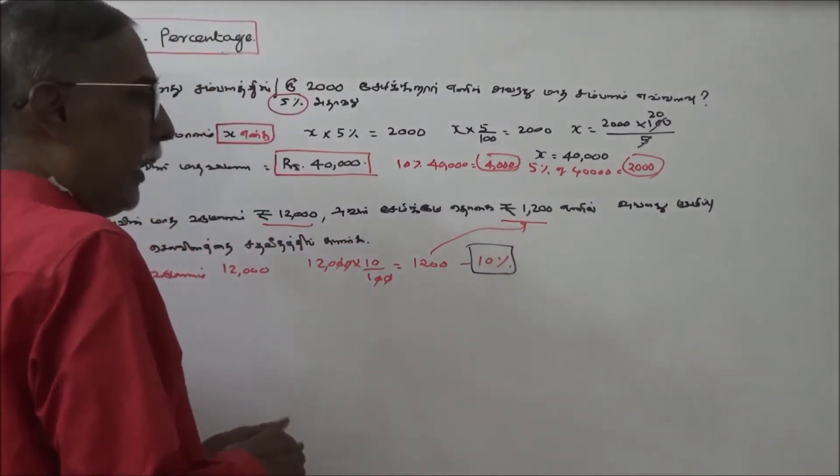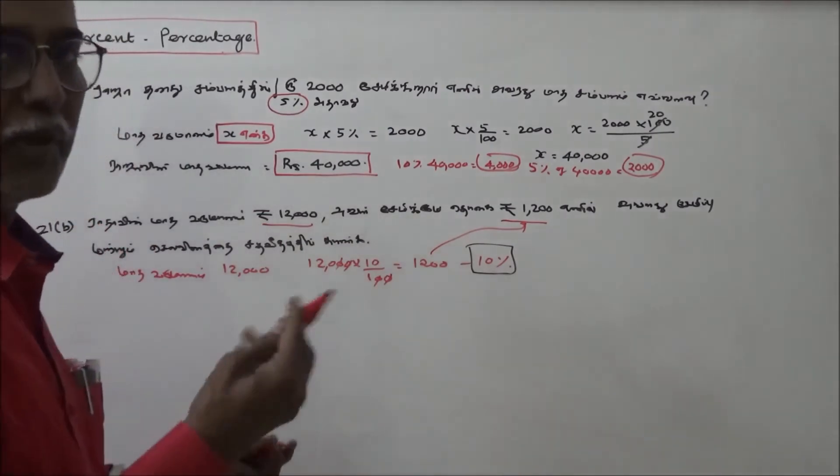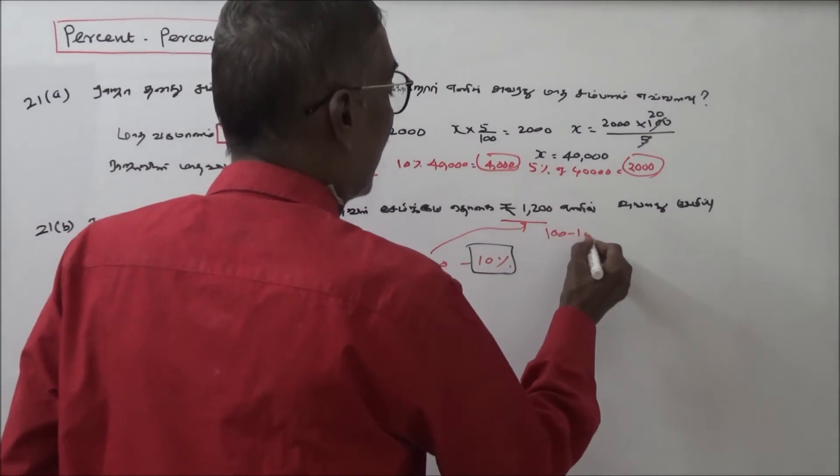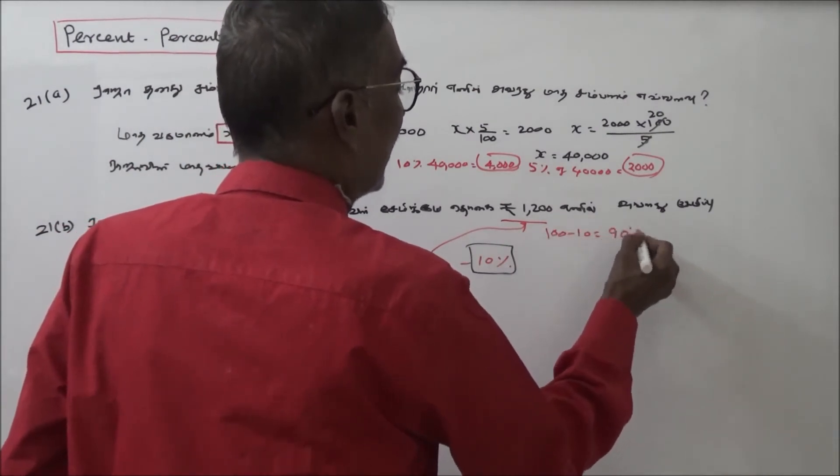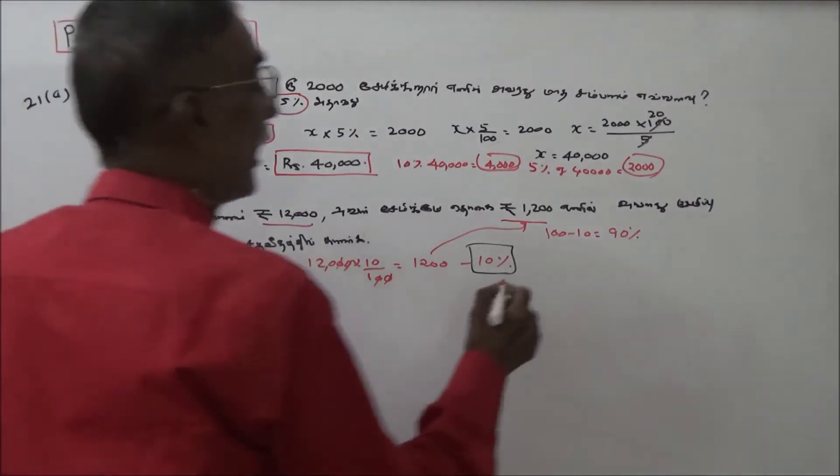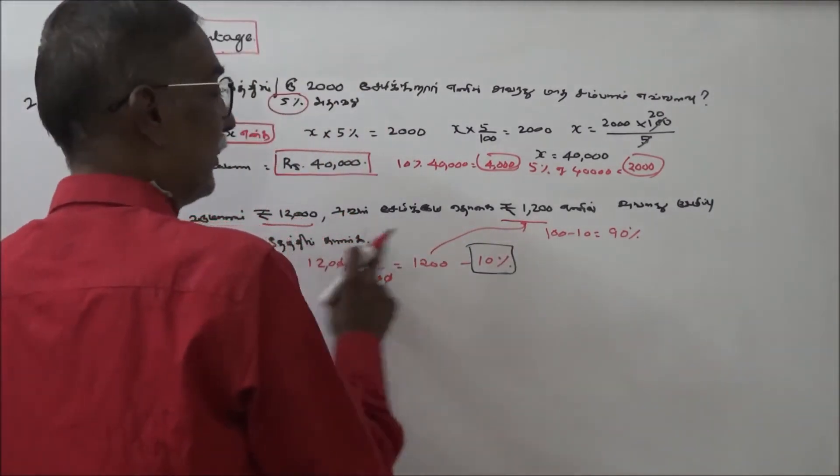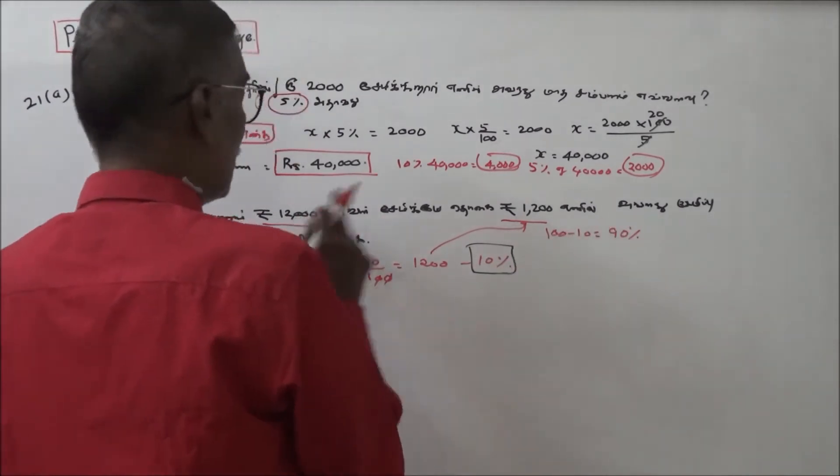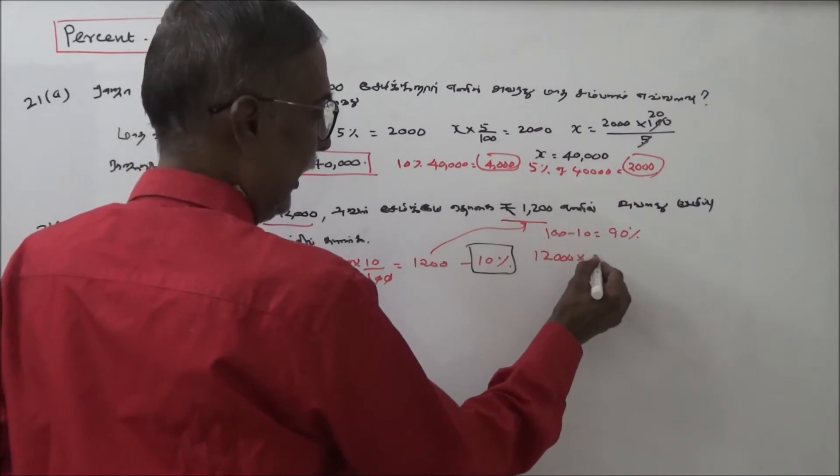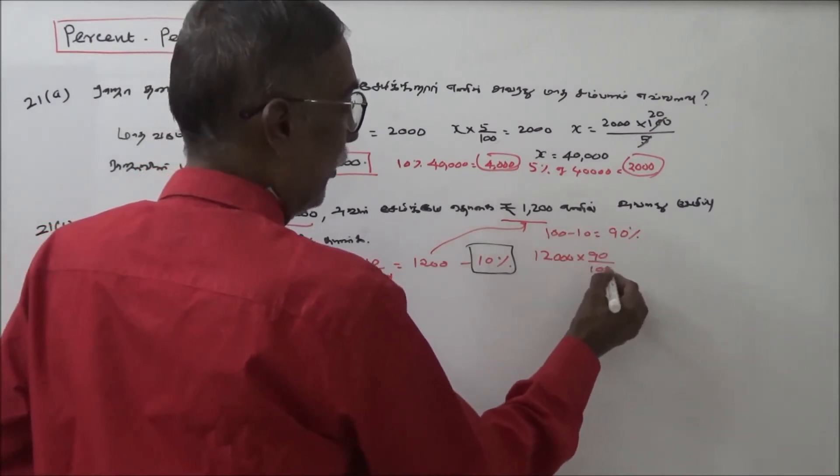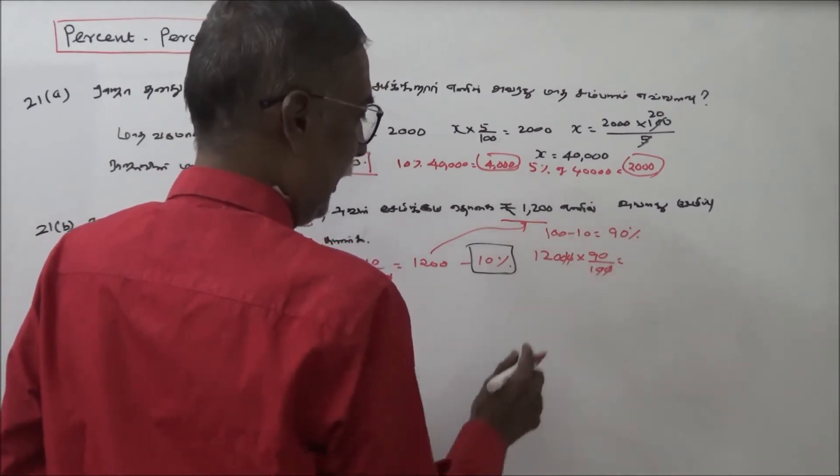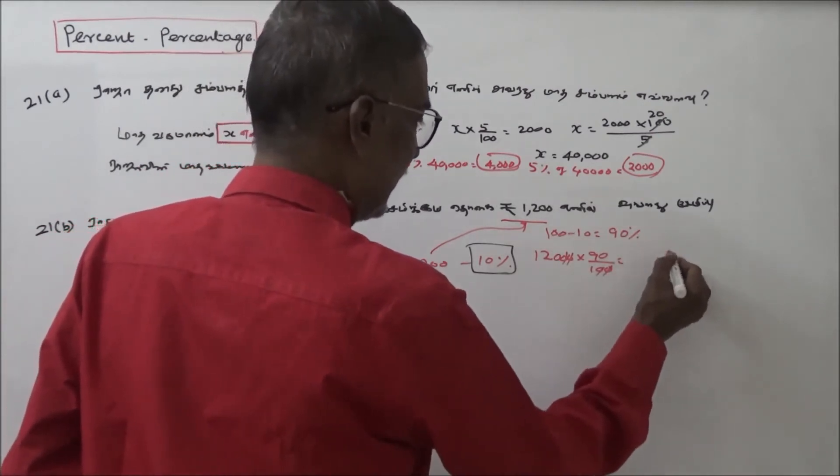Remaining amount after 10% savings: 90 percentage of 12,000. Calculate 12,000 into 90 by 100. That gives us 120 into 90.